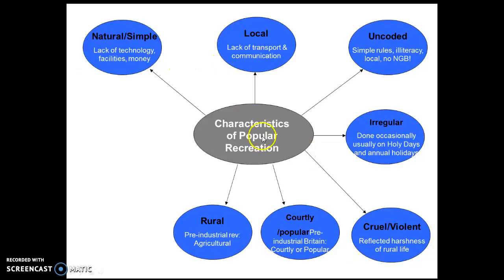Activities that took place as part of popular recreation were rural. It was pre-industrial revolution, so the majority of activities were linked to agriculture — played on farmyards and fields obviously lacking buildings and factories, which came about after 1800 and the Industrial Revolution.